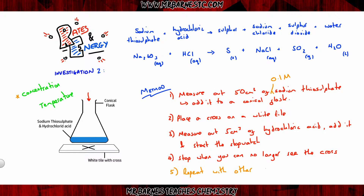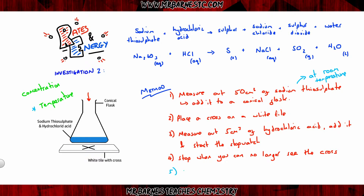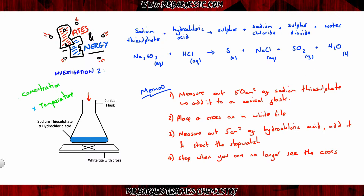For concentration, choose a starting concentration such as 0.1 mol/dm³ and then repeat for other concentrations. For temperature, choose room temperature to begin with and then repeat at 30, 40, 50 degrees and so on. You will see that if you increase the concentration and temperature, the cross will disappear quicker in a shorter amount of time.